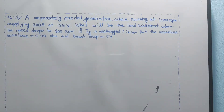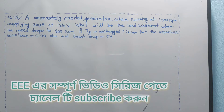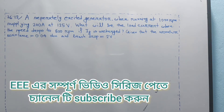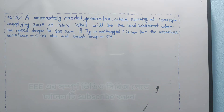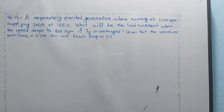I am going to solve a tricky problem with a DC generator. The question is very important. A separately excited DC generator, when running at 1000 RPM, supplying 200A at 125V. What will be the load current when the speed drops to 800 RPM if the field current IF is unchanged, given that the armature resistance is 0.04 ohm and brush drop is 2V.